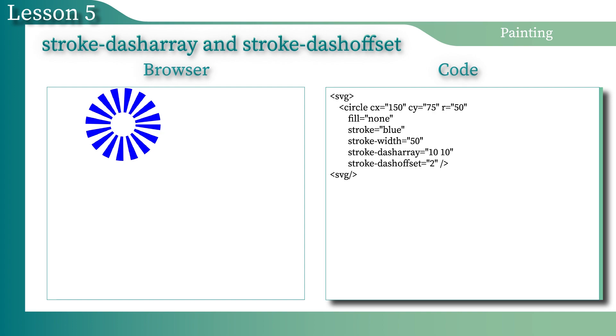The StrokeDashOffset determines the position of the origin point of the DashArray on the path. If the StrokeDashOffset is negative, the origin point shifts in the direction of the negative infinity that is beyond the path. If the value of the StrokeDashOffset is positive, then it moves forward along the path. The StrokeDashOffset can also move the origin point beyond the path in the positive infinity direction.